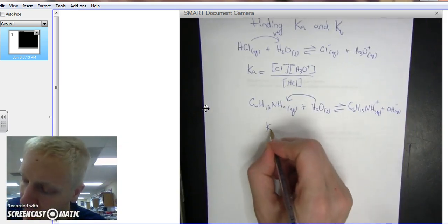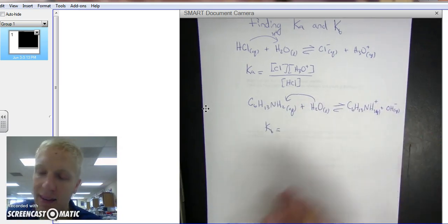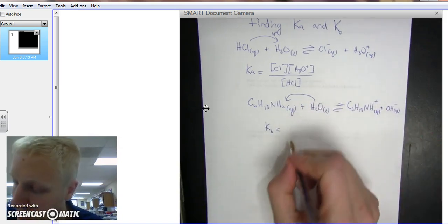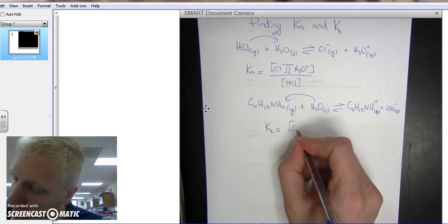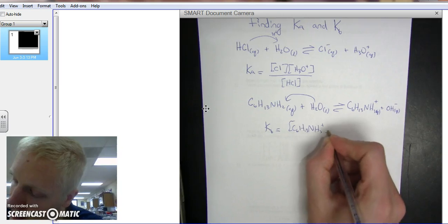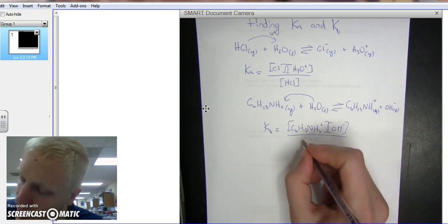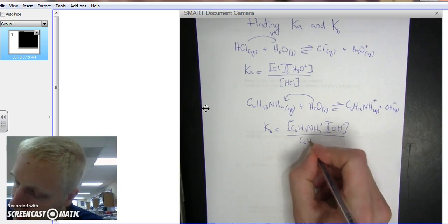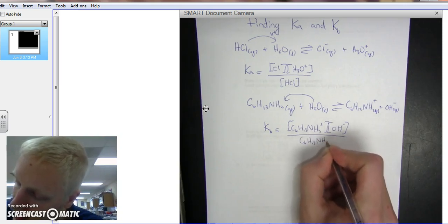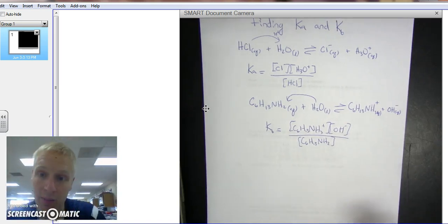To write our Kb expression, it's products over reactants, and we omit all solids and liquids. So in this case, it's [C6H13NH3⁺][OH⁻] divided by [C6H13NH2], the actual base. That's our Kb expression.